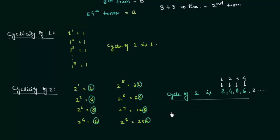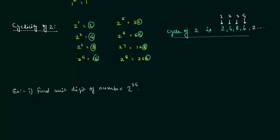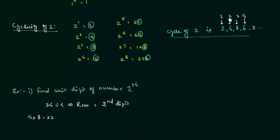Now we will use this property to find the digit at units place. Example 1: find the unit digit of 2 raised to power 34. We have 4 digits in the cycle, so we divide 34 by 4. The remainder is equal to 2, because 4 times 8 gives 32 and 34 minus 32 is 2. A remainder of 2 means the second digit of the cycle, which is 4. So 2 raised to power 34 has 4 at the units place.